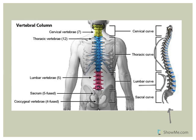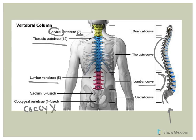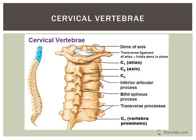The cervical vertebrae are found in the neck — cervical means neck — and there are seven total. There are 12 thoracic vertebrae and five lumbar vertebrae in the lower back. The sacrum is typically five vertebrae fused together. The coccyx, or tailbone, is usually four to five vertebrae fused together.